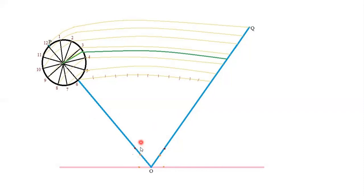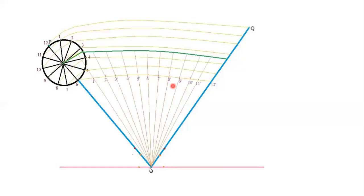Divide the 72-degree angle into 12 equal parts using the protractor. Name the divisions 1, 2, 3, and so on. From point O, use your scale to extend each line till the locus of center — the locus of center is the path traced by the center of the rolling circle. Once you get the intersection points on the locus of center, name them C1, C2, C3, and so on.